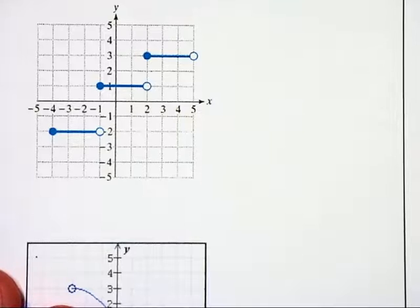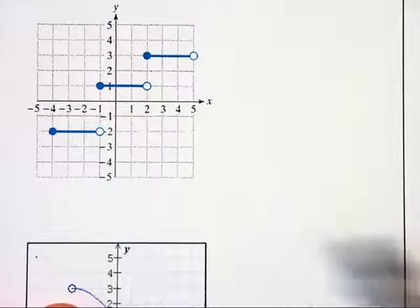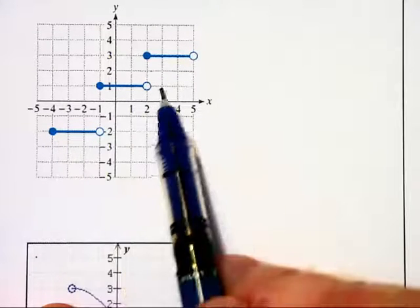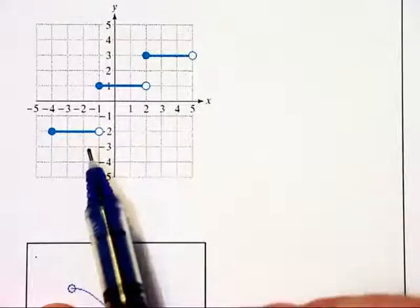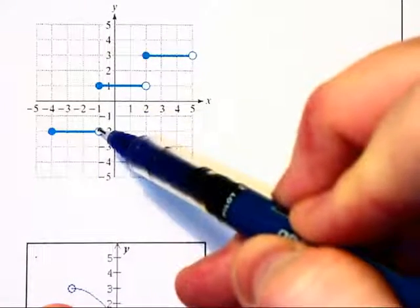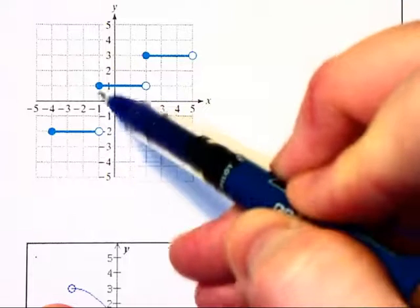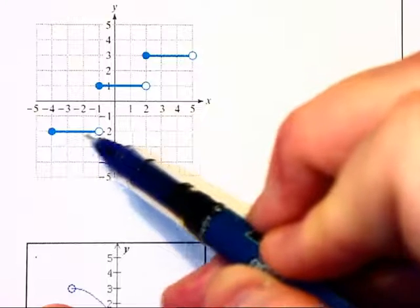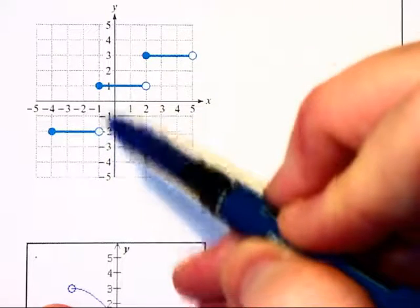This next graph is a rather interesting one. This is actually what's known as a step graph because it looks like a staircase. Notice we have solid dots and open circles on the ends. And let's look right here at negative 1. Negative 1 is part of the domain because the x value is always consistent here.